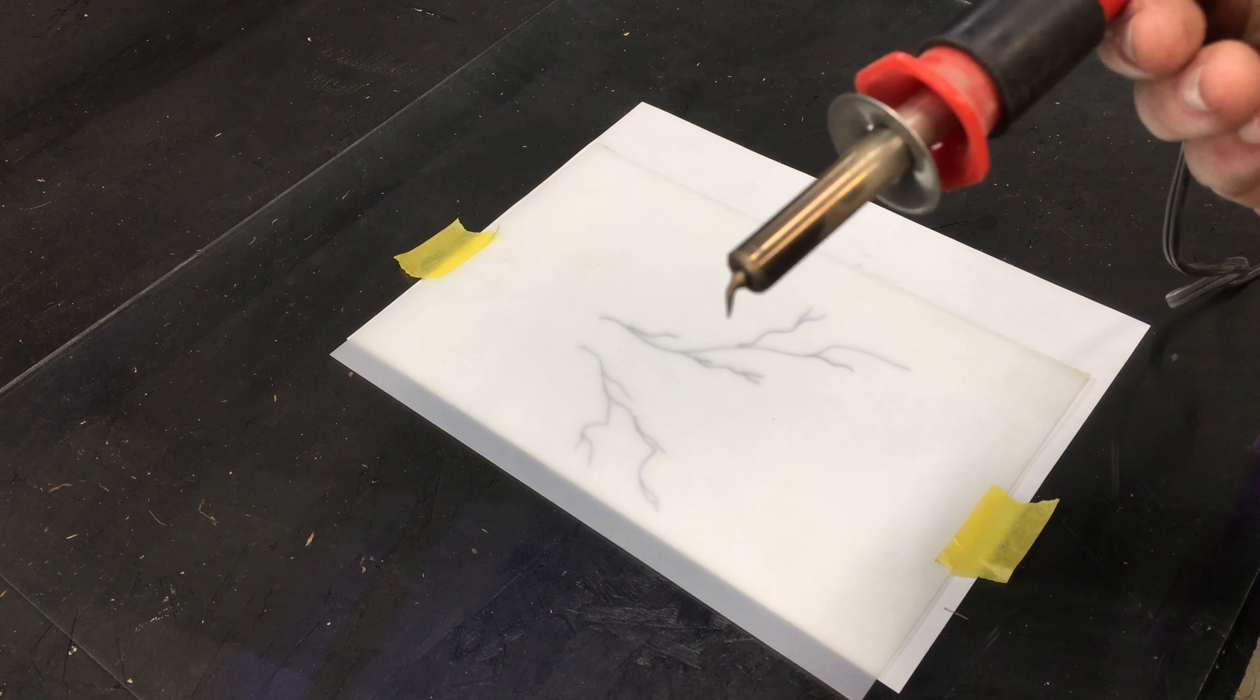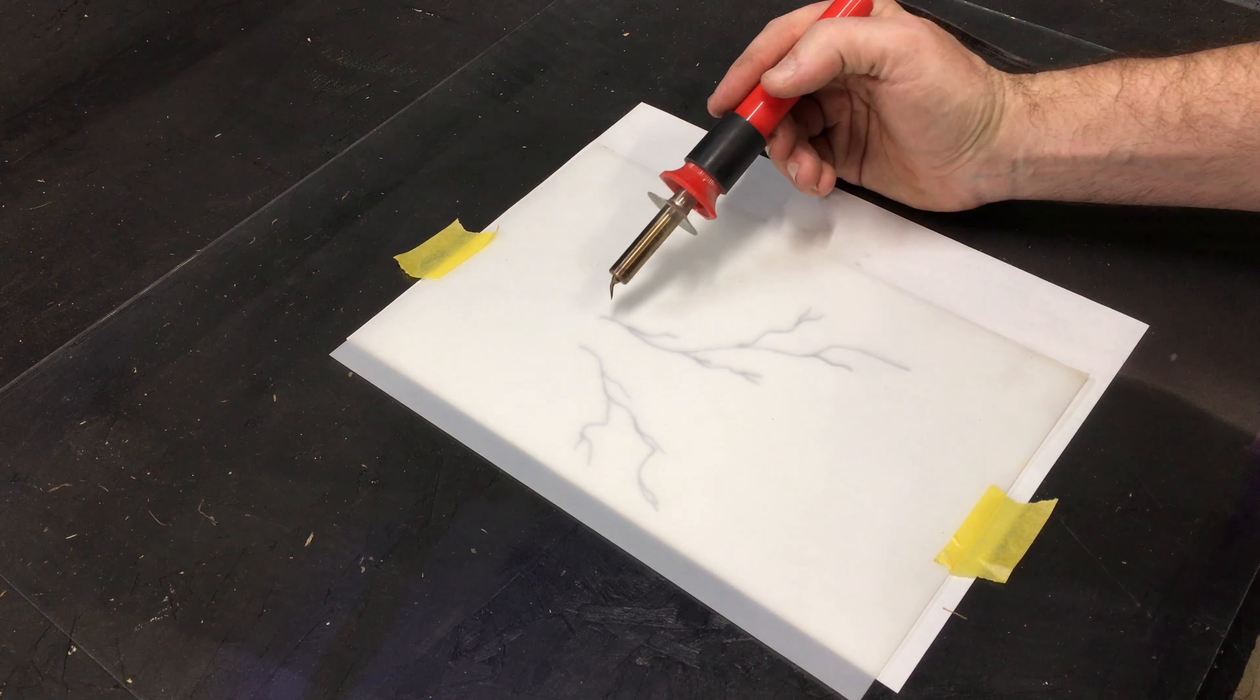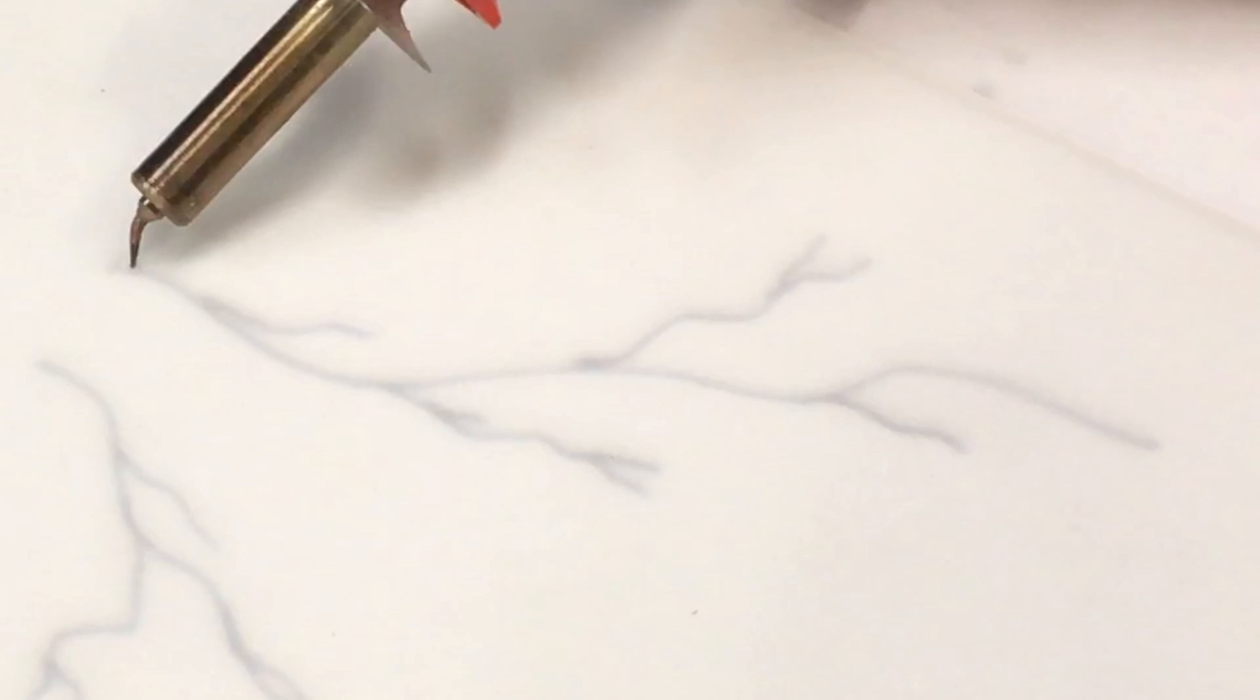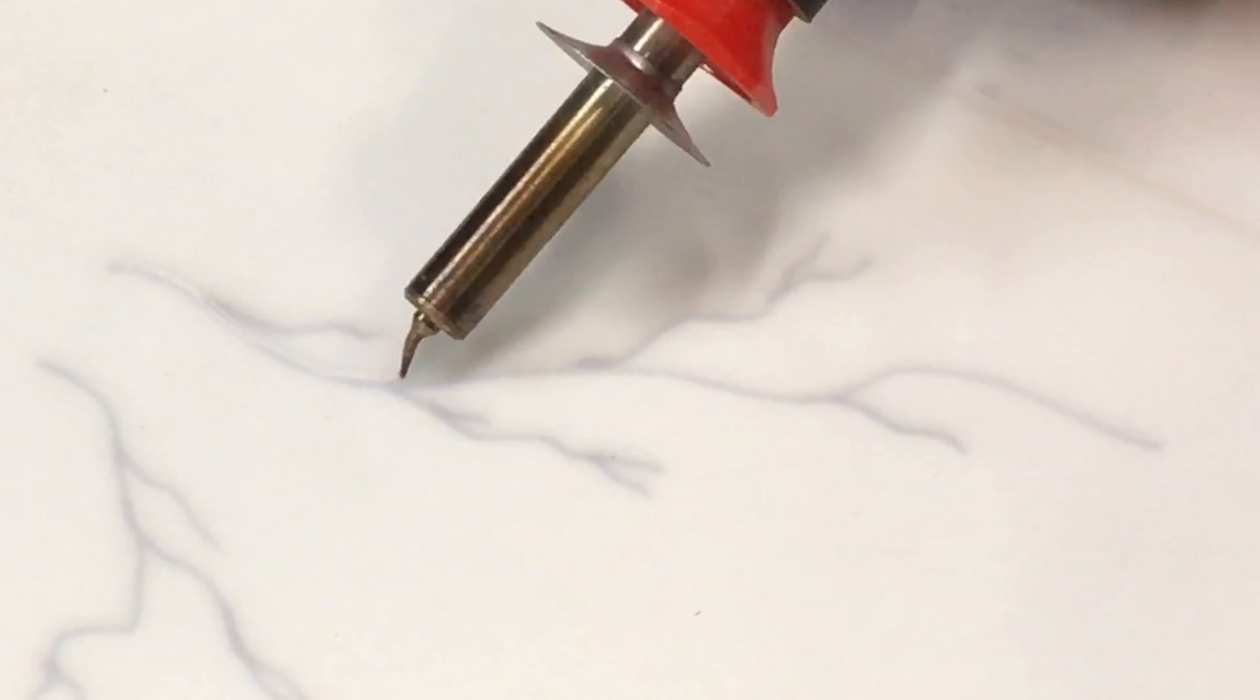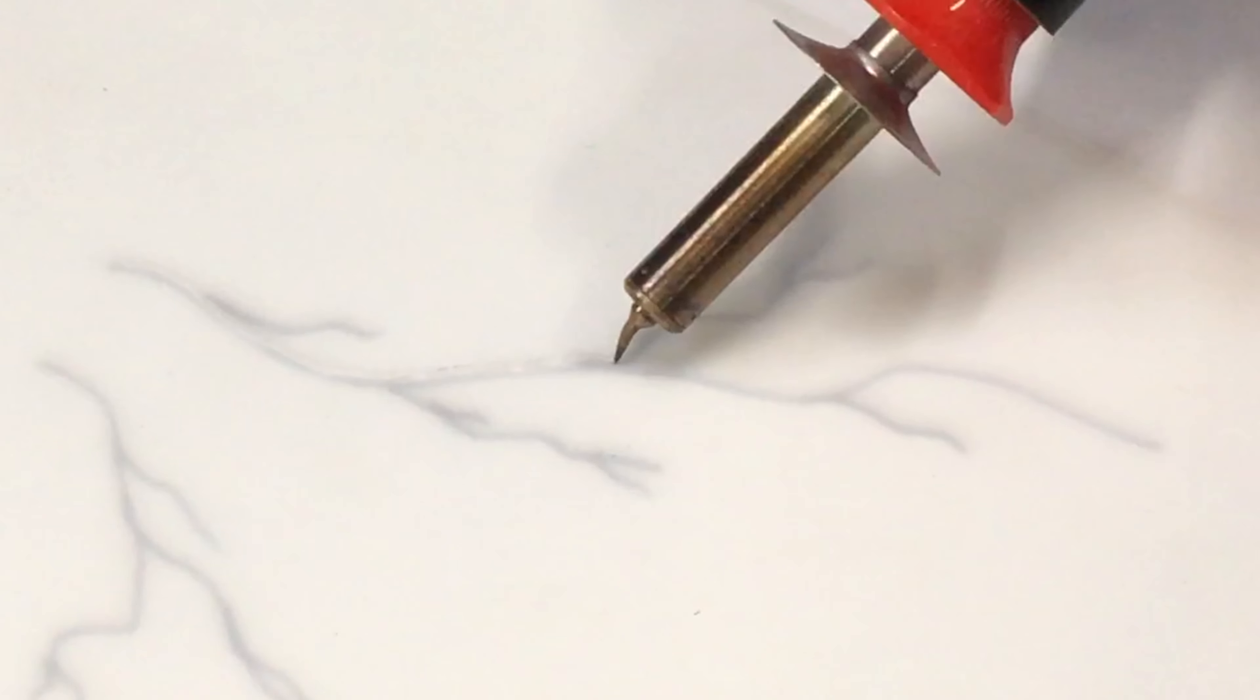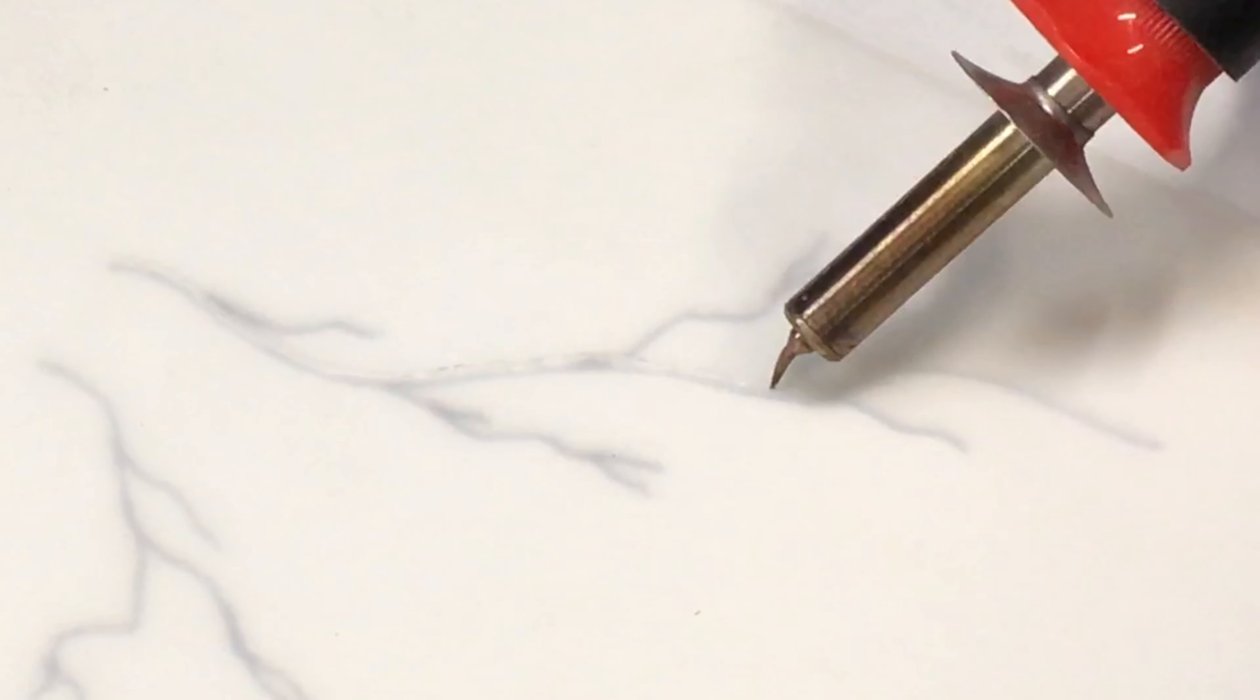Once you've allowed your stencil burner to warm up, it's time to start cutting out your image. You'll want to take your time, go slow. You can always go back over it if you need to, especially on a lightning strike. It doesn't have to be perfect. It actually needs to be a little more jagged. So if you watch, I'm actually kind of wiggling the burner while I move to make sure it looks like electricity and not just a line.